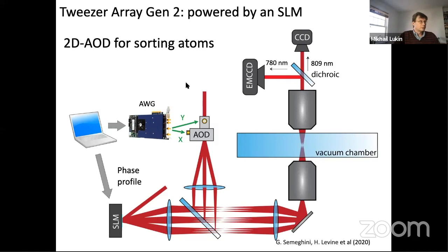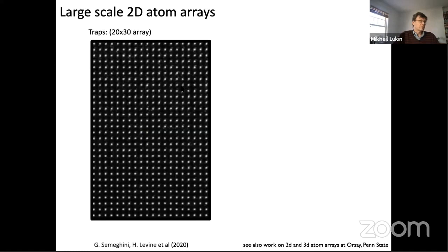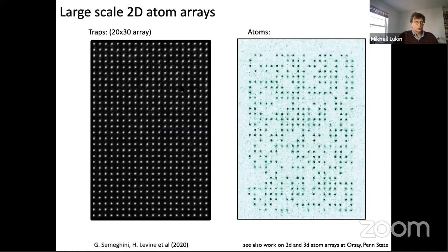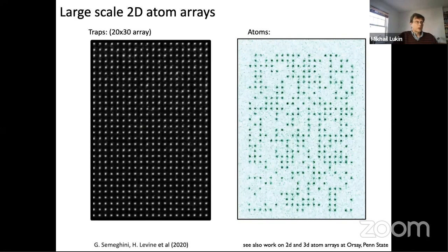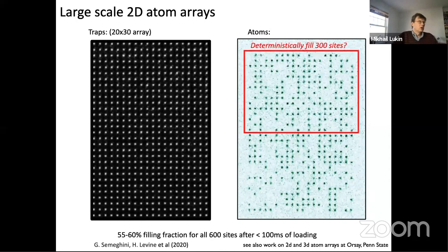To sort atoms in this 2D array, we use two crossed acousto-optic deflectors, allowing us to move atoms in both spatial dimensions. We create about 600 traps and load them with approximately 60 percent probability per site, controlled with an arbitrary waveform generator.